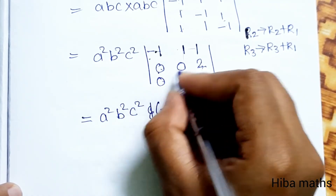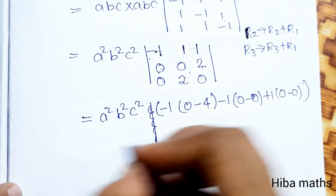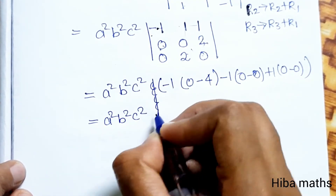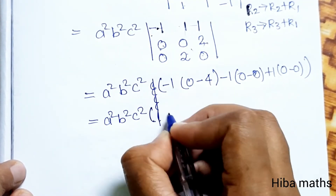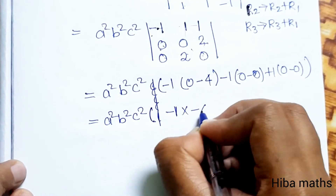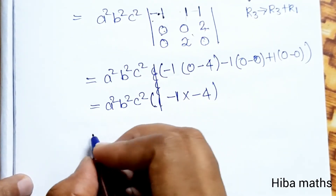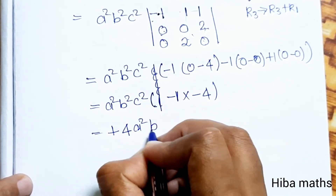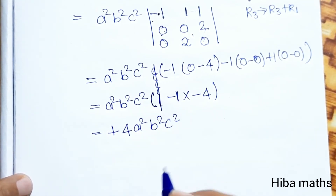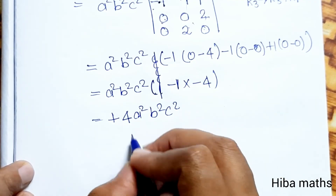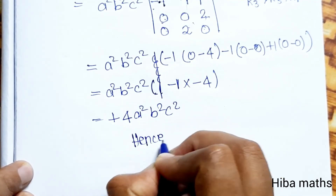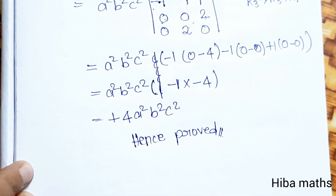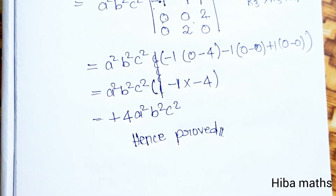So we get a-squared b-squared c-squared times minus 1 times minus 4, which equals 4 a-squared b-squared c-squared. This is our proof — hence proved. If you have any doubt, please leave it in the comment section. Thank you so much for watching.